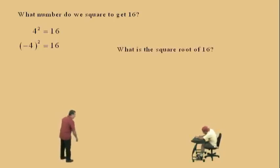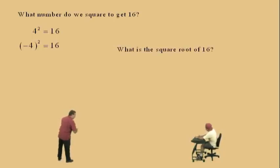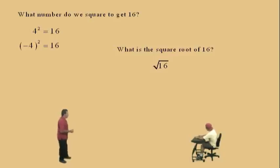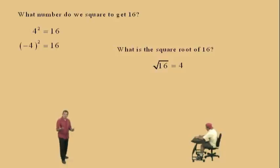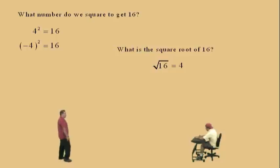Now let's talk about the square root. What is the square root of 16, Charlie? We have a 16 and we have a radical symbol there. That radical symbol with the 16 underneath is saying: what is the square root of 16? When somebody asks you what is the square root of 16, you're thinking what number do you square to get 16, and it's 4. But we also saw that negative 4 squared equals 16. When you use a radical symbol, we give what we call the principal root, which is always positive. Whenever you take the square root of a number, the answer will always be positive.